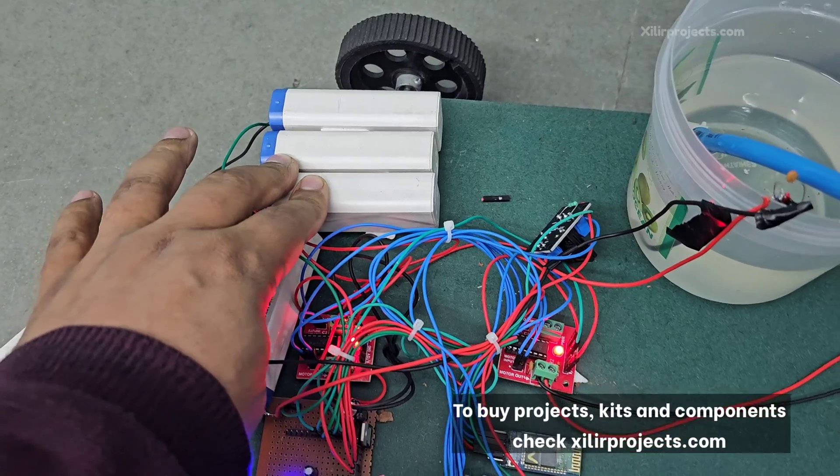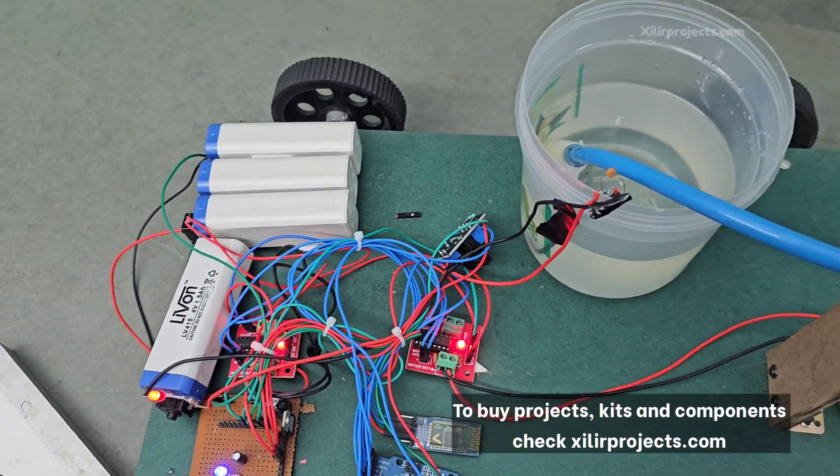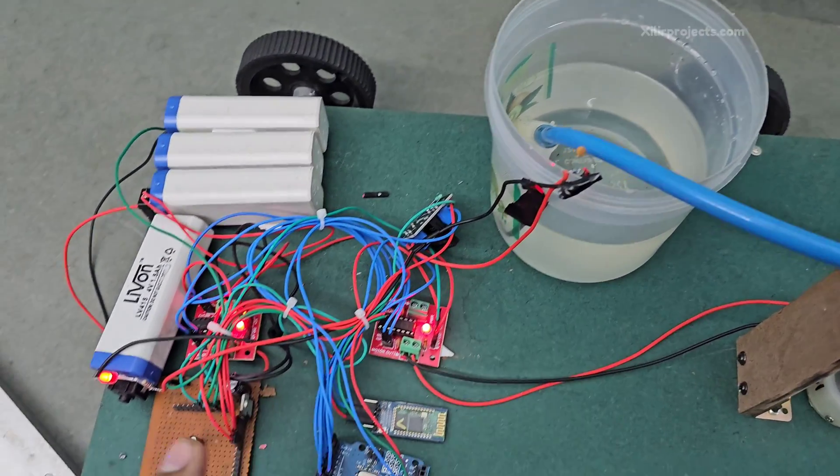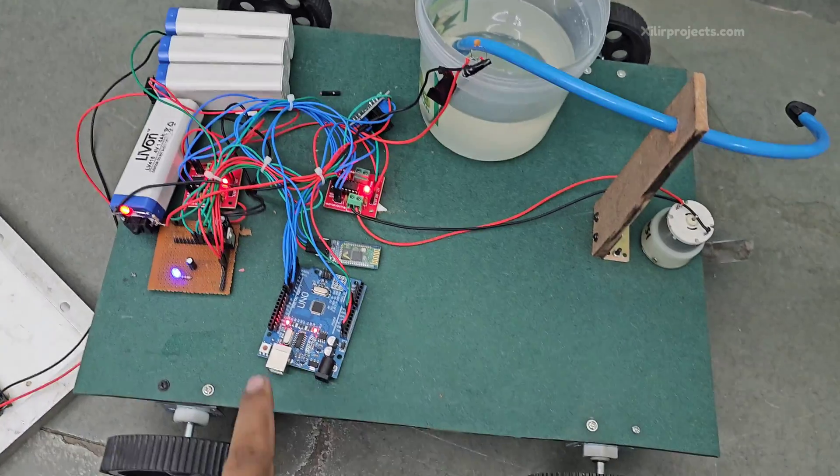And these are 3 batteries connected in series so that it can provide 12V to this motor driver which controls these wheels. Then we have Arduino Uno microcontroller.